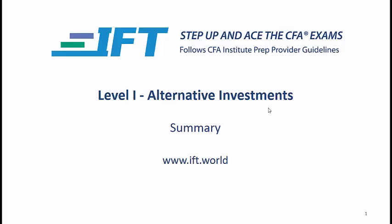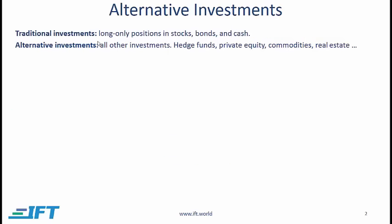Alternative investments: a summary. When we say traditional investments, we mean long only positions in stocks, bonds and cash. Alternative investments then is almost everything else. The types of alternative investments that we will consider here are hedge funds, private equity, commodities and real estate.